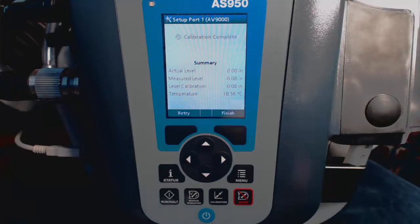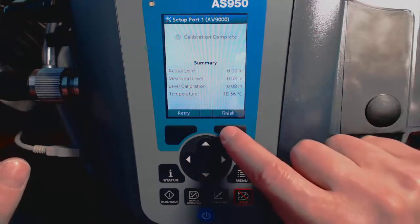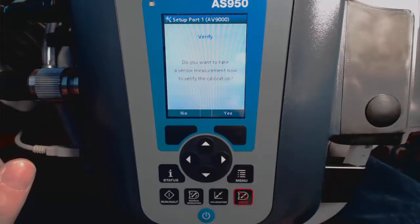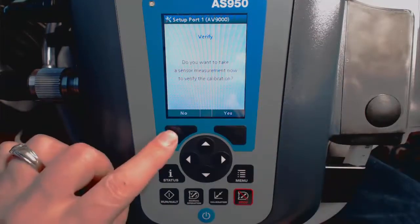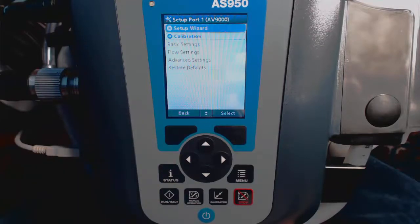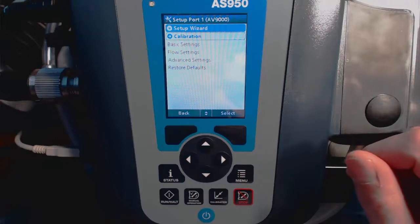A successful calibration will be indicated by the green checkbox in the top line on the display. Select Finish. Then you have a chance to verify the calibration. I've selected No here. That wraps up our Setup Wizard.